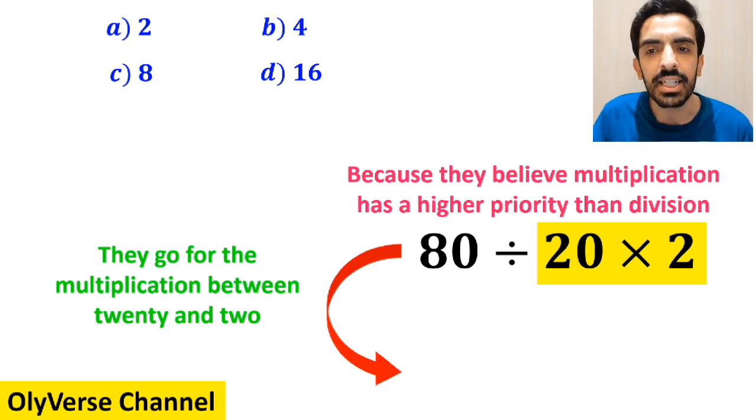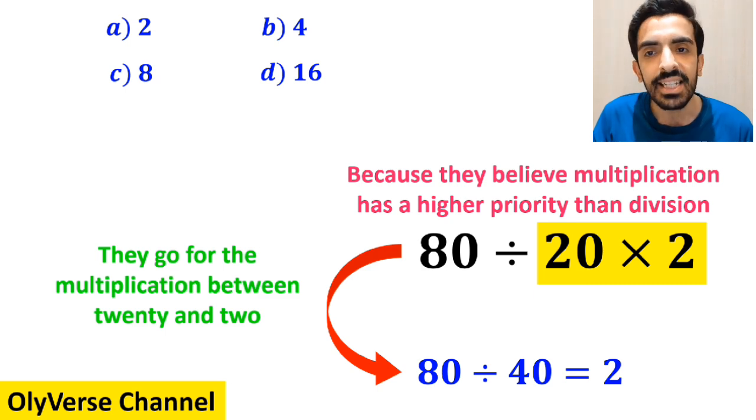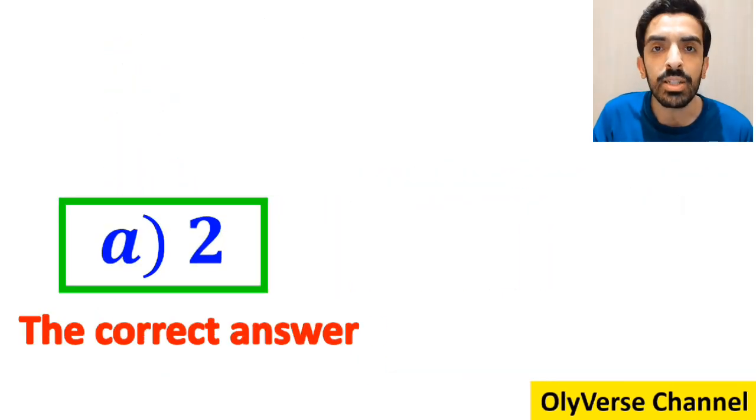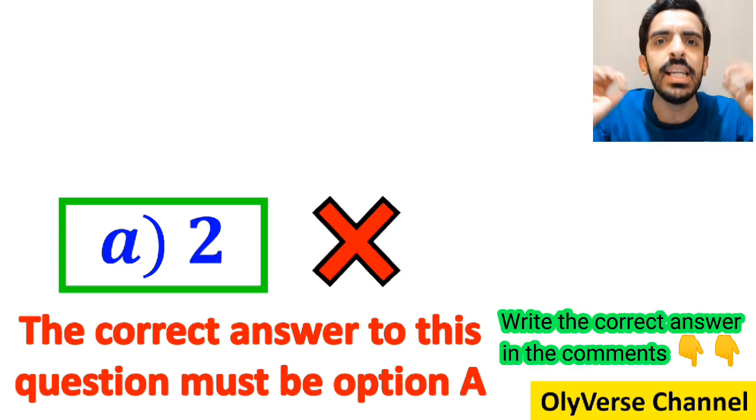So they simplify this expression and rewrite it as 80 divided by 40 which finally gives them the answer 2. Then without any hesitation they conclude that the correct answer to this question must be option A. However, this answer is absolutely wrong.